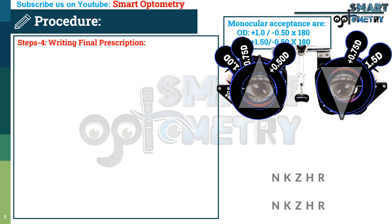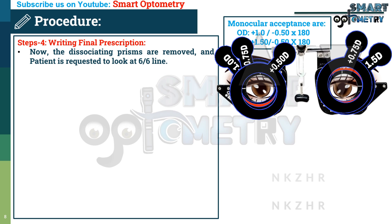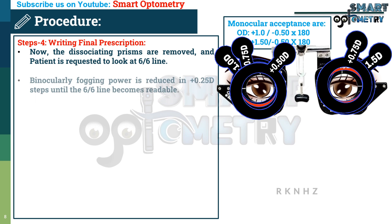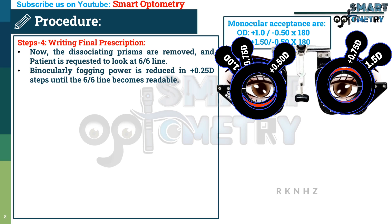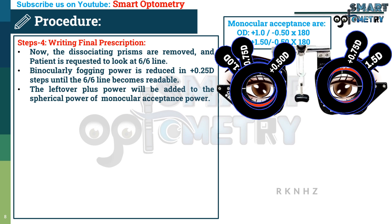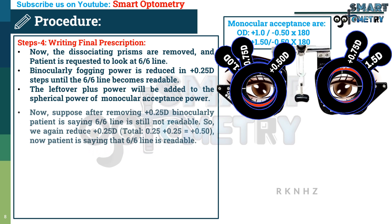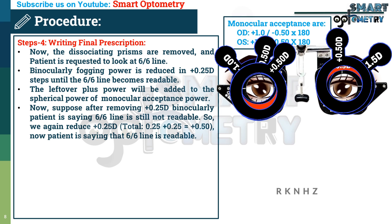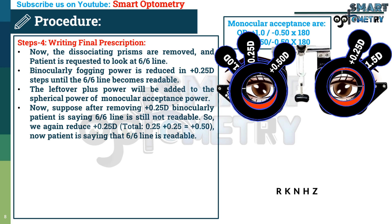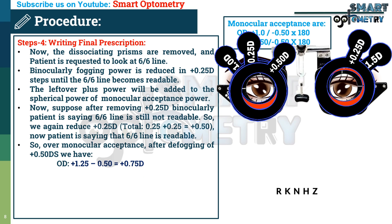Step 4: Writing the final prescription. The dissociating prisms are removed and the patient is asked to look at the 6/6 line. Binocular fogging power is reduced in 0.25 diopter steps until the 6/6 line becomes readable. Suppose after removing plus 0.25 diopter binocularly the 6/6 line is still not readable, so we reduce another plus 0.25 diopter — now the patient says the 6/6 line is readable. After defogging of plus 0.50 diopter spherically, the leftover power is: right eye — plus 0.75 diopter; left eye — plus 0.25 diopter.